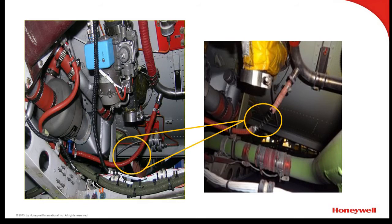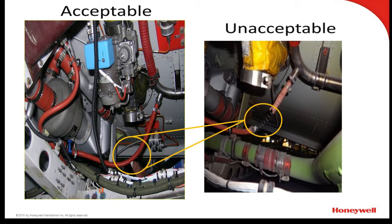The constant bleed air hose to the ACM prevents ice buildup at the turbine. The integrity of this constant bleed air hose is very important, as holes and splits will compromise the anti-ice protection of the ACM and its reliability. Replacement is the only corrective action for this type of damage.